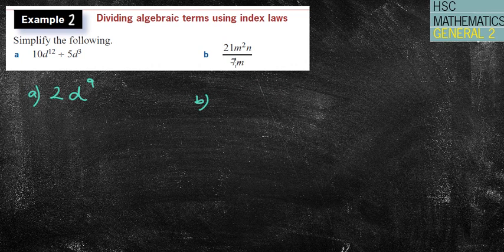Next one, 21 over 7 is 3. m squared over m, well, that becomes just m because 2 take away 1 is just 1. And then I've just got an n on top, and that's my answer. So another fairly easy one.